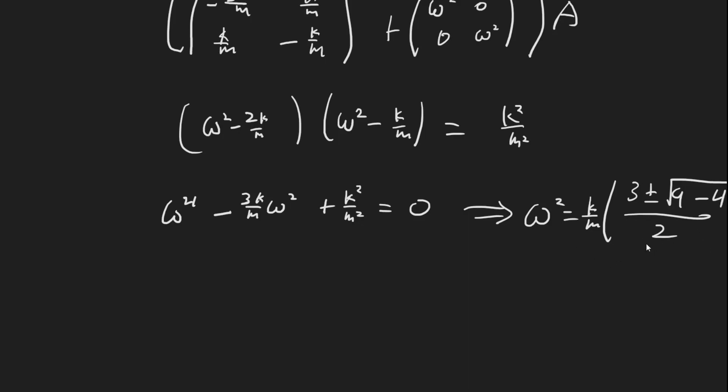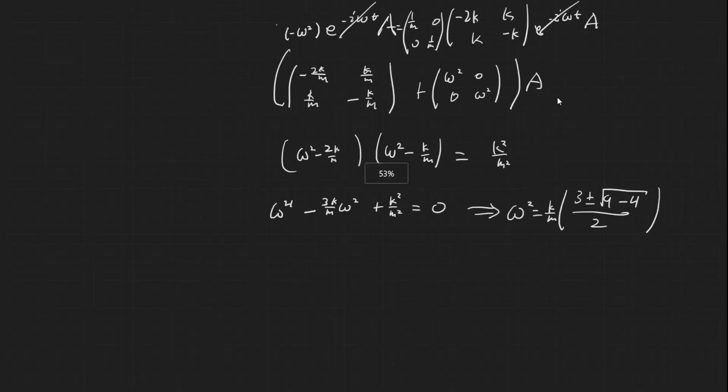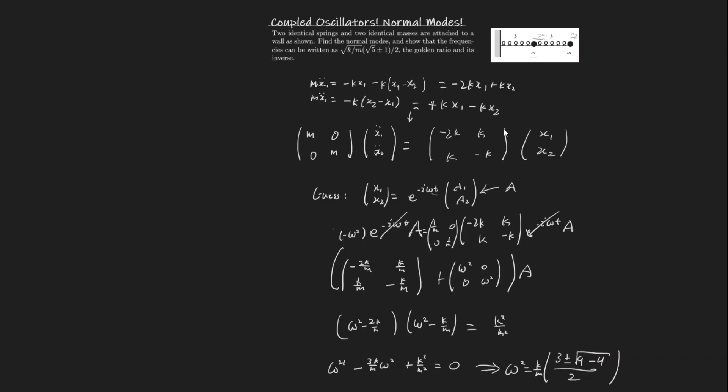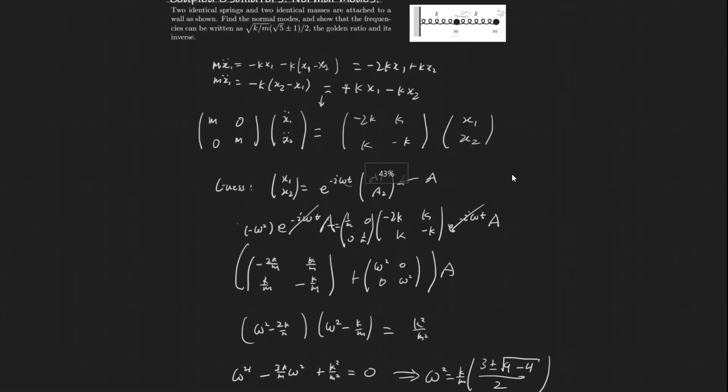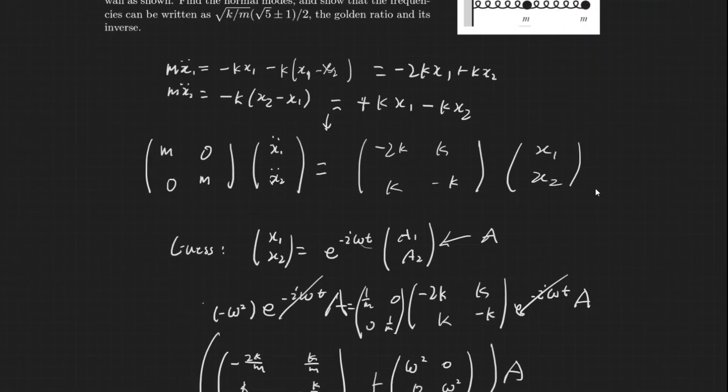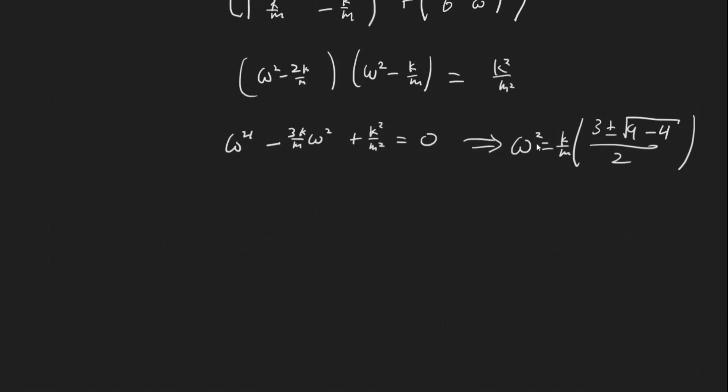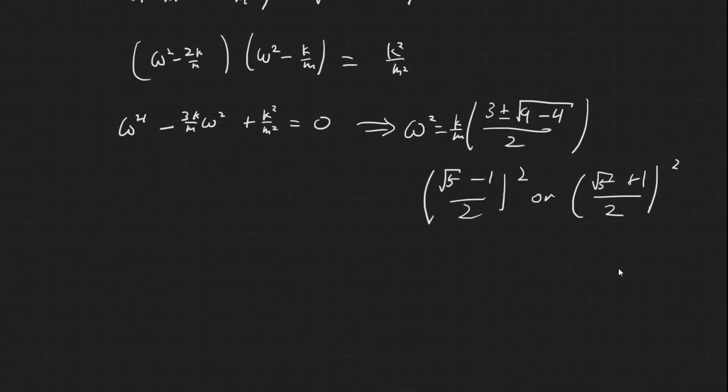So we already got the angular frequency here, and the problem basically asks us to show what the frequencies were, and we already have that here. We have omega squared, and you can easily check that this is in fact equal to root 5 minus 1 over 2 squared, or root 5 plus 1 squared, 1 over 2 squared.